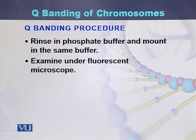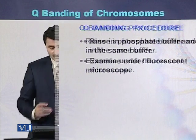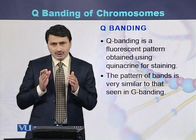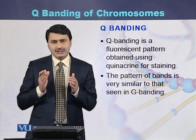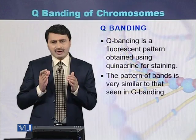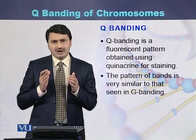Rinse in phosphate buffer and mount the slides in the same buffer. Examine the slides under a fluorescent microscope. In summary, Q banding uses quinacrine dye instead of Giemsa used in G banding, and the banding pattern that appears is similar to what we see in Giemsa staining.